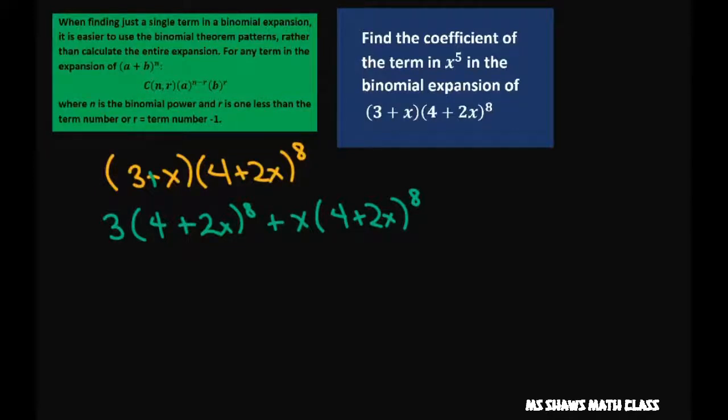Now what we want is the x to the fifth term. So basically what I want to do is look at my x's and solve for r. So if you look at this, I'm using this formula: n choose r. I'm going to take this one and look at my x's. That would be 3 n choose r, my a is 4 to the 8 minus r, and my b is x to the r.